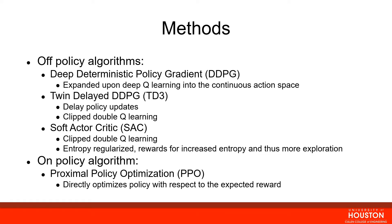TD3 and SAC improve upon DDPG. TD3 introduces a delay in the policy updates to help reduce large variance, and it also does clipped double Q-learning where two Q-networks are used during training and the smaller value of the two is used in the actual training.